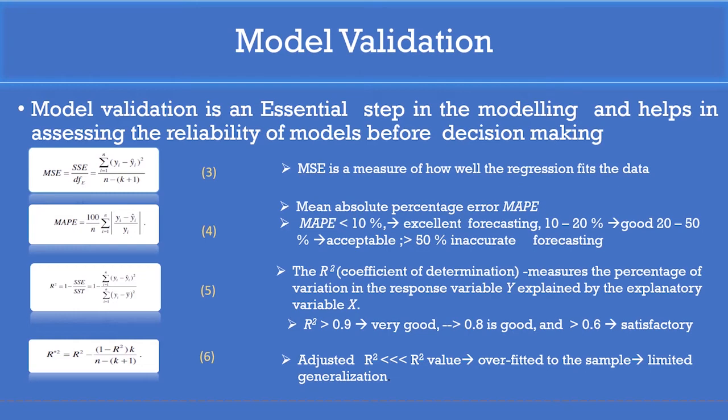Another important parameter called adjusted R square is also calculated for evaluation of the model, where the adjusted R square value is calculated using the R square value. If adjusted R square is very much less than the R square value, we can conclude the model overfits to the samples, which limits the generalization of new data.